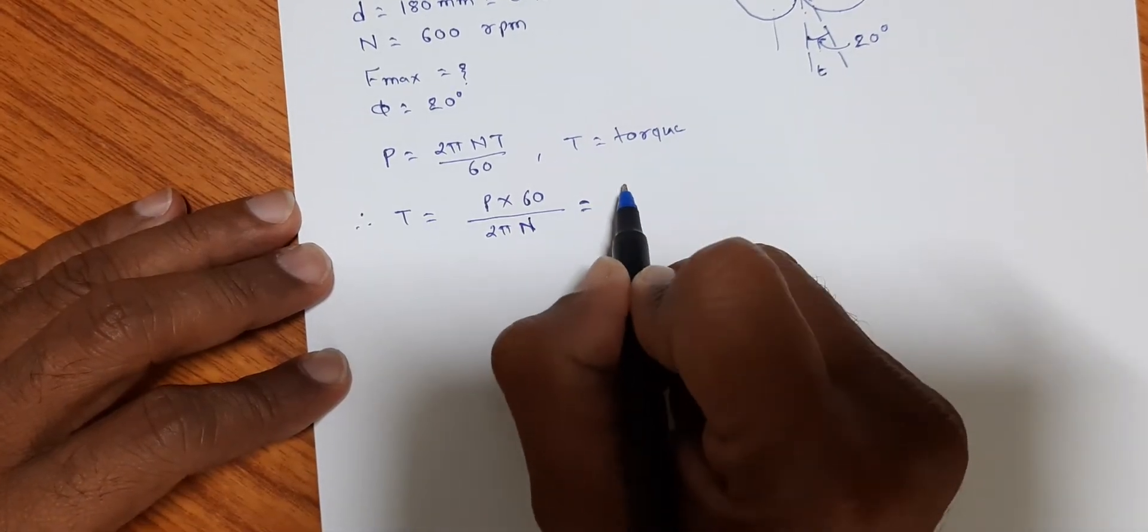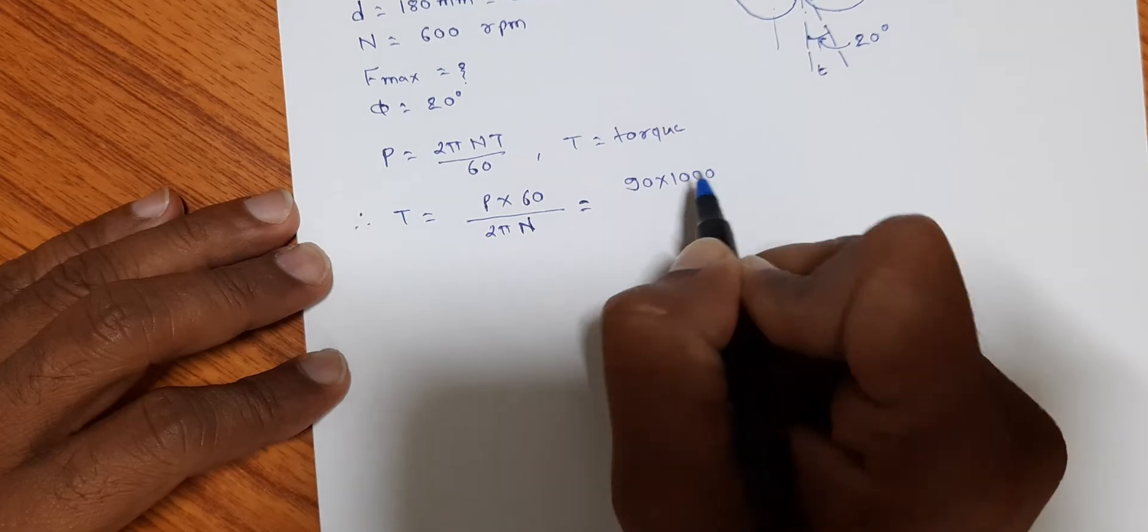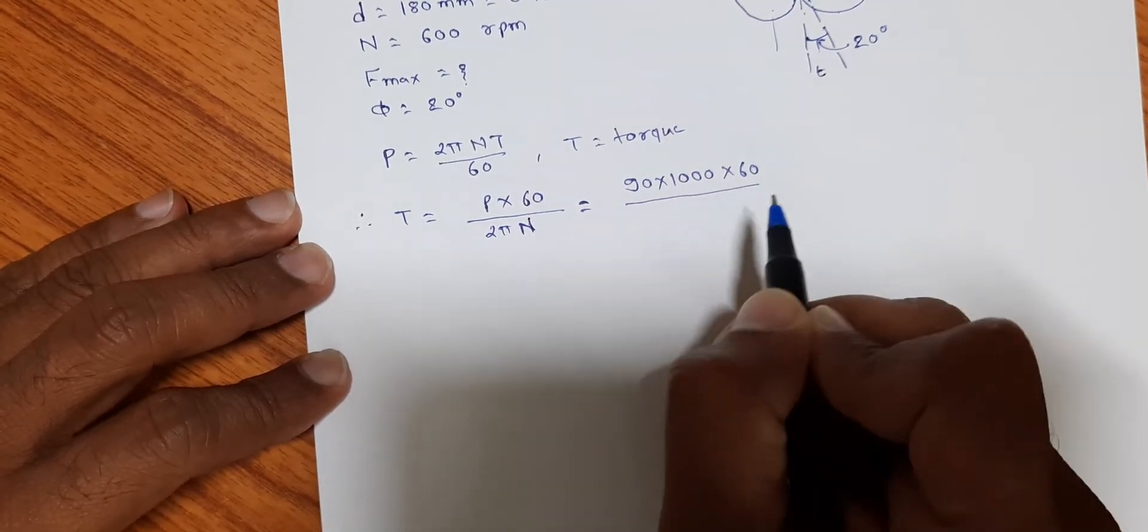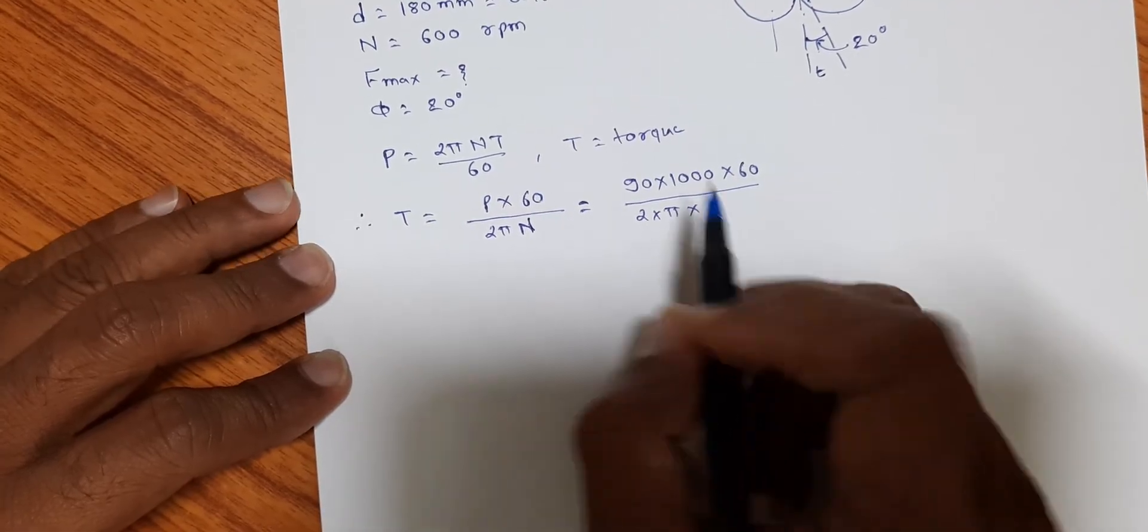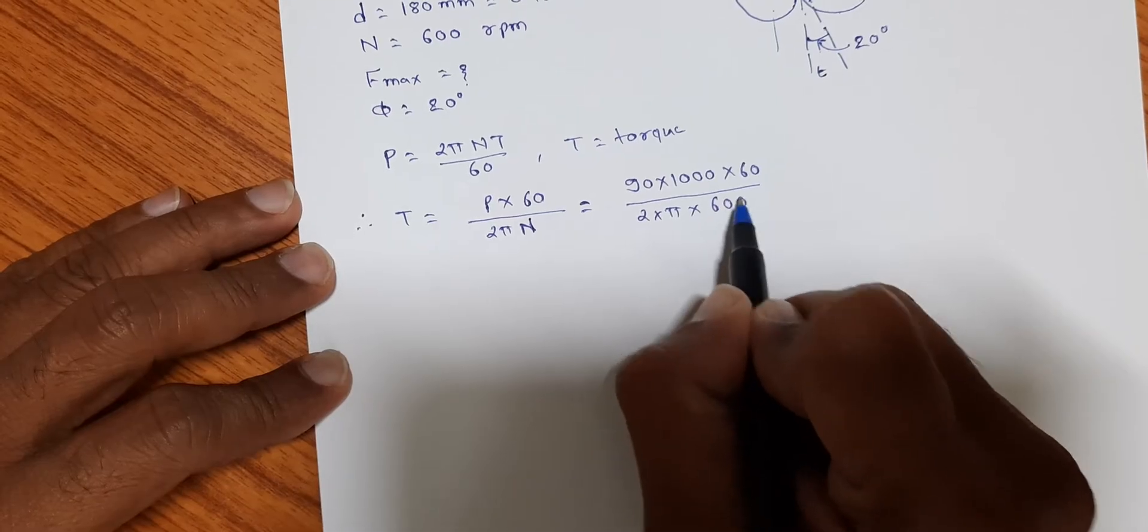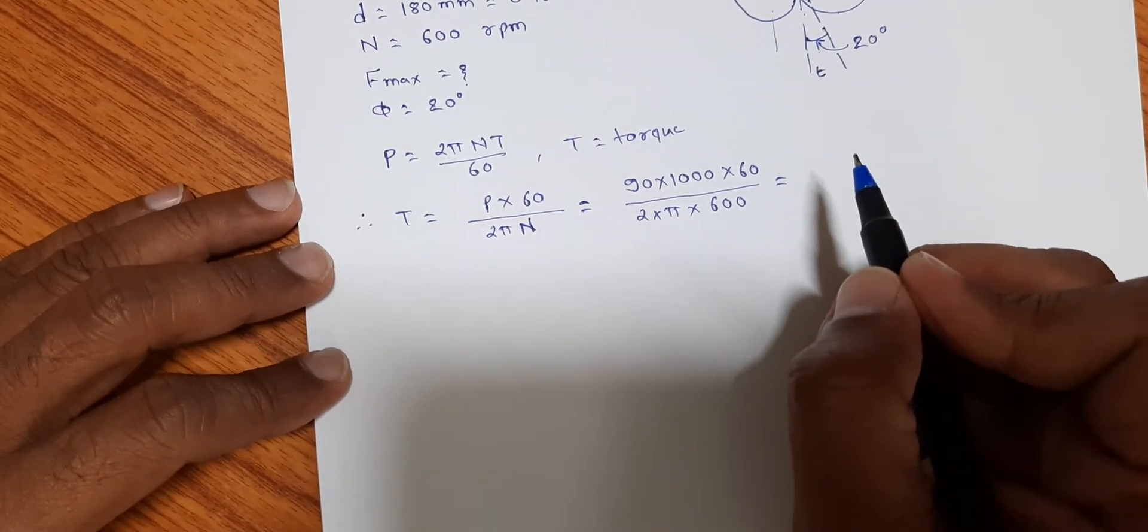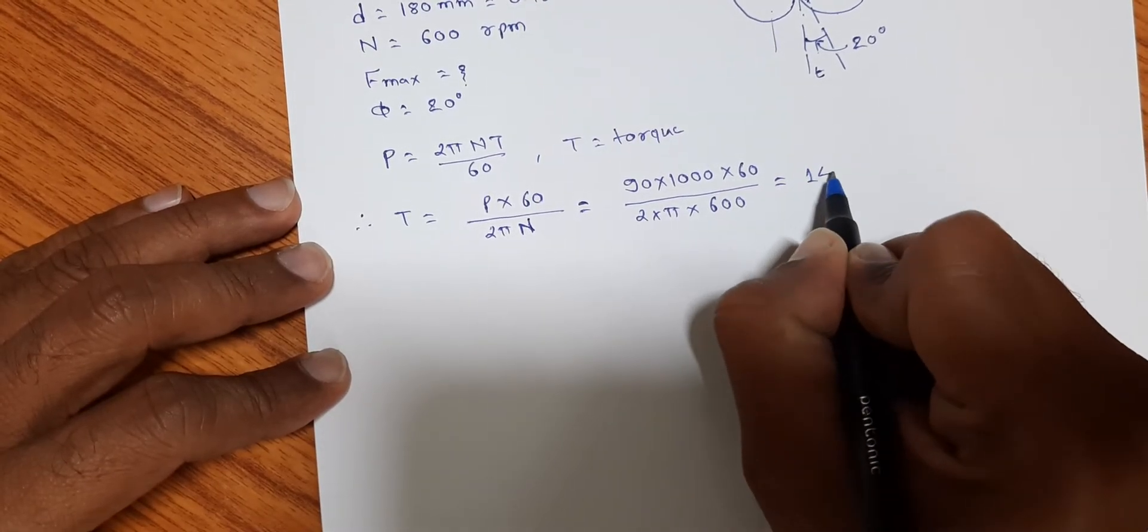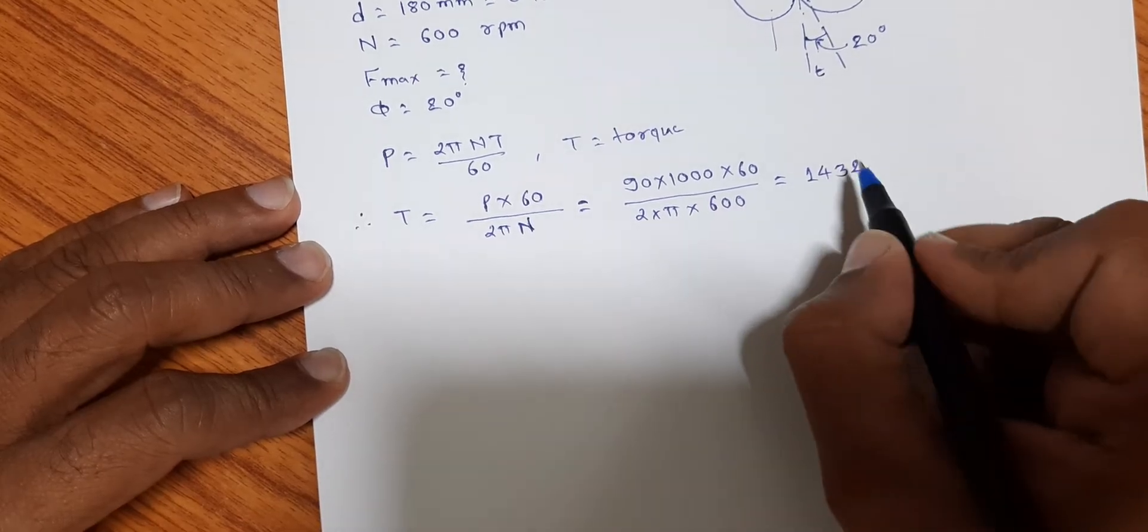Torque is equal to 90 into 1000 multiplied by 60 divided by 2 into π into N, that is equal to 600 rpm. On calculation, we found that torque acting T is equal to 1432.39 newton-meters.